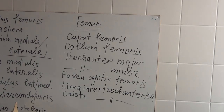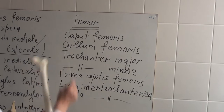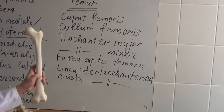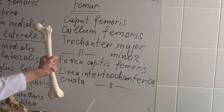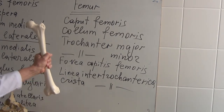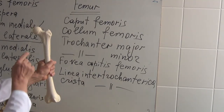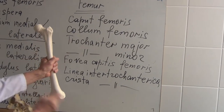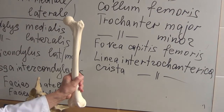We are discussing the skeleton of the inferior limb. The first long bone is the femur, also called the femoral bone. The femoral bone consists of the corpus femoris and two epiphyses: the distal epiphysis and the proximal epiphysis. These epiphyses serve to form joints.